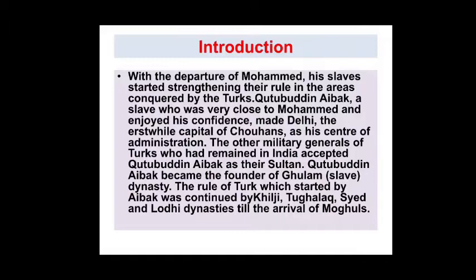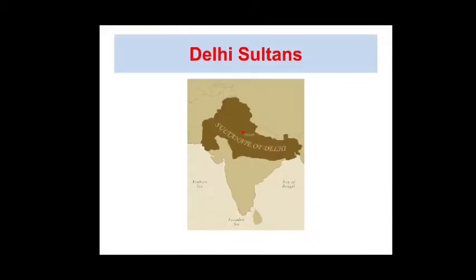Delhi Sultanate refers to the five short-lived Muslim kingdoms. Turks and Afghans originated and ruled the territory of Delhi between 1206 to 1526. In the 16th century, their line was overthrown by the Mughals. The rule of Turks, which was started by Aibak, was continued by the Khilji, Tughlaq, Sayyid, and Lodi Dynasties until the arrival of the Mughals.